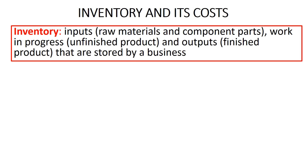The second important concept is inventory. Inventory refers to inputs — for example, raw materials and component parts — work in progress, that is unfinished product, and outputs, that is finished product, that are stored by a business. Look down the left-hand side of your vocabulary sheets, find the term inventory, and write this definition in there.